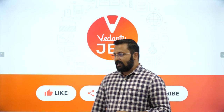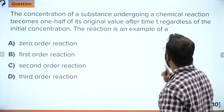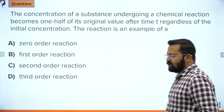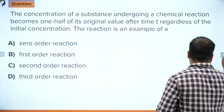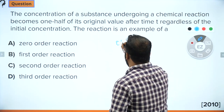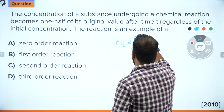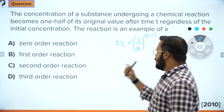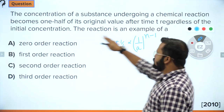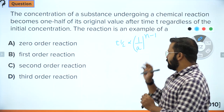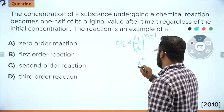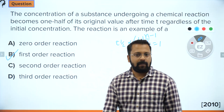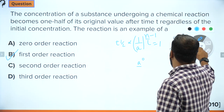The first question: the concentration of a substance undergoing a chemical reaction becomes one-half of its original value after time t, regardless of the initial concentration. What type of reaction is this? Using the relation that t-half is proportional to 1 over a to the power (n minus 1), where n is the order: since t-half is independent of the initial concentration a, we need a to the power 0, which means n equals 1. So this is a first order reaction.